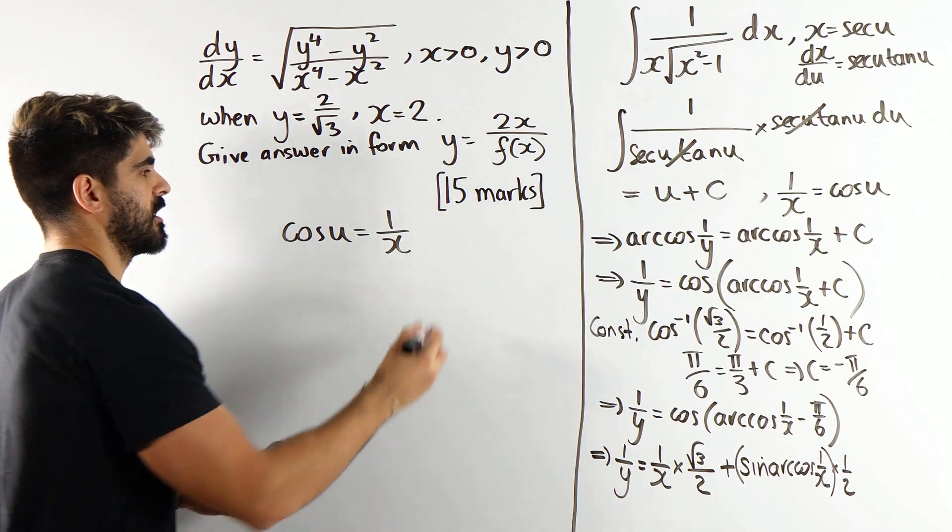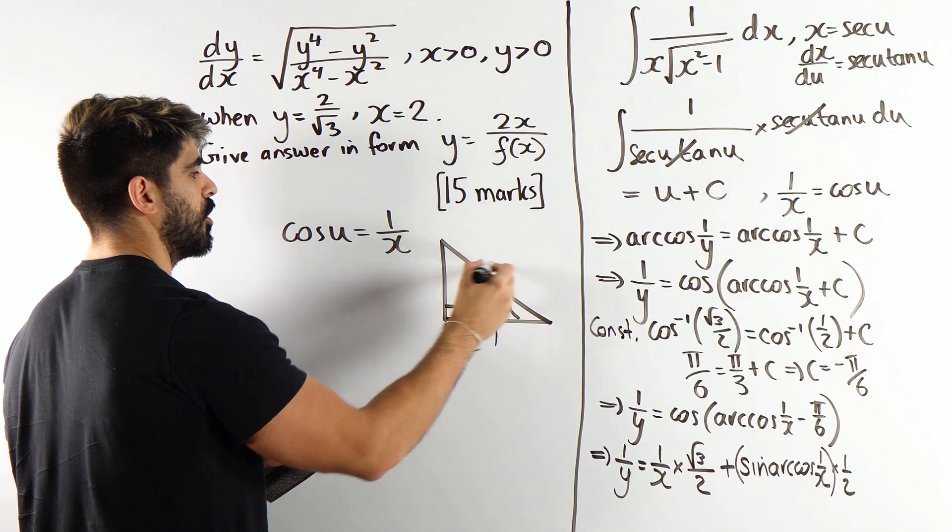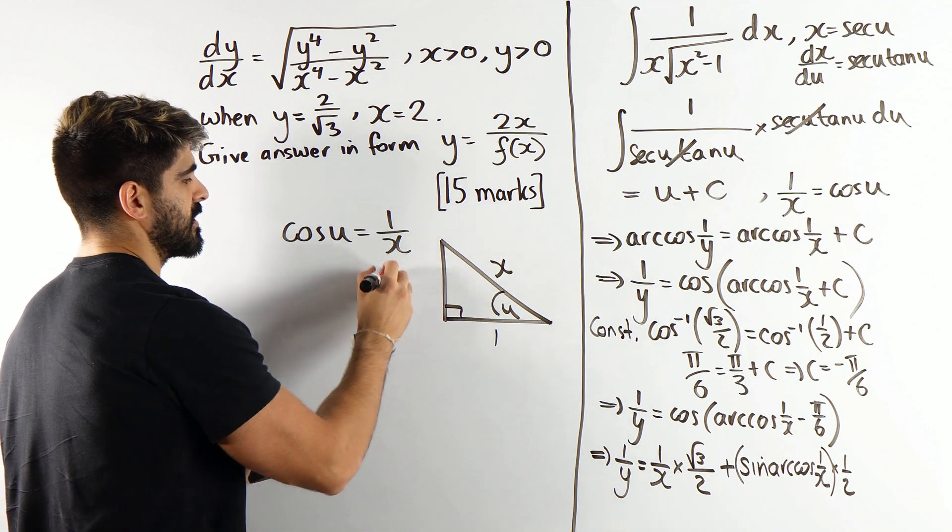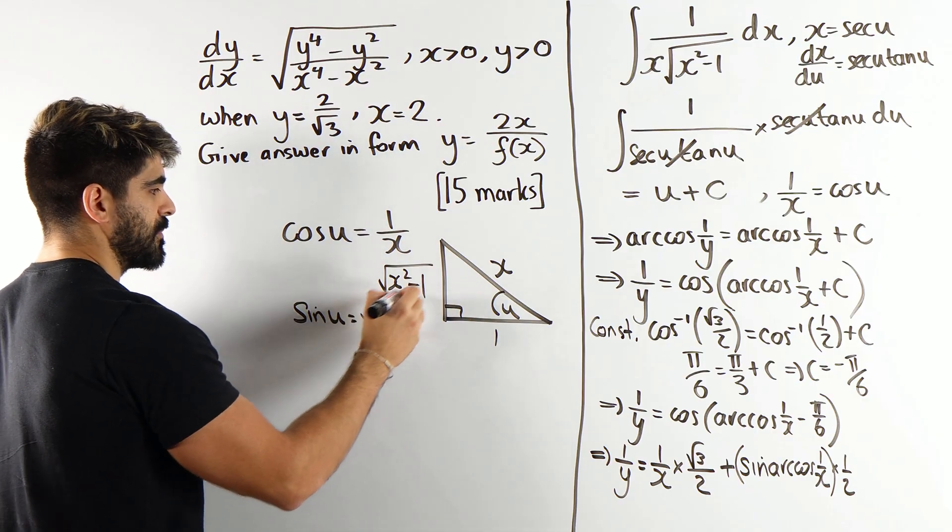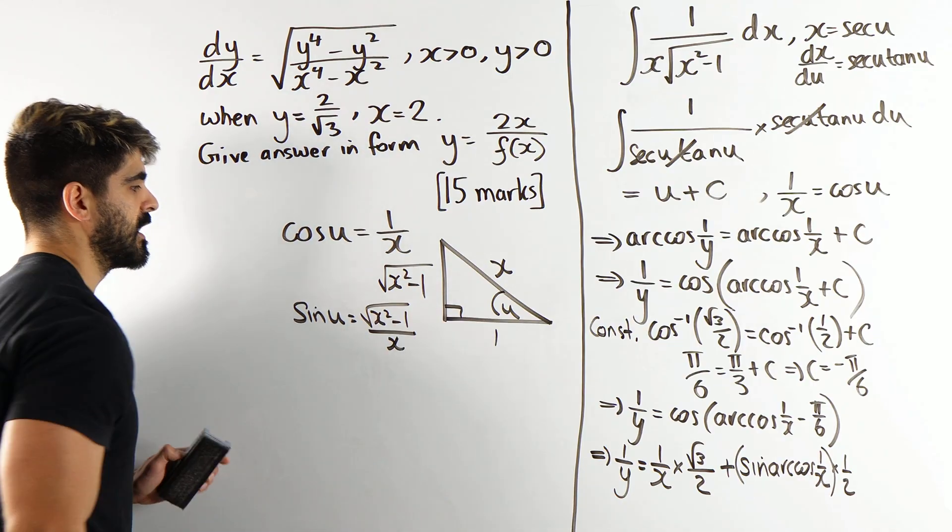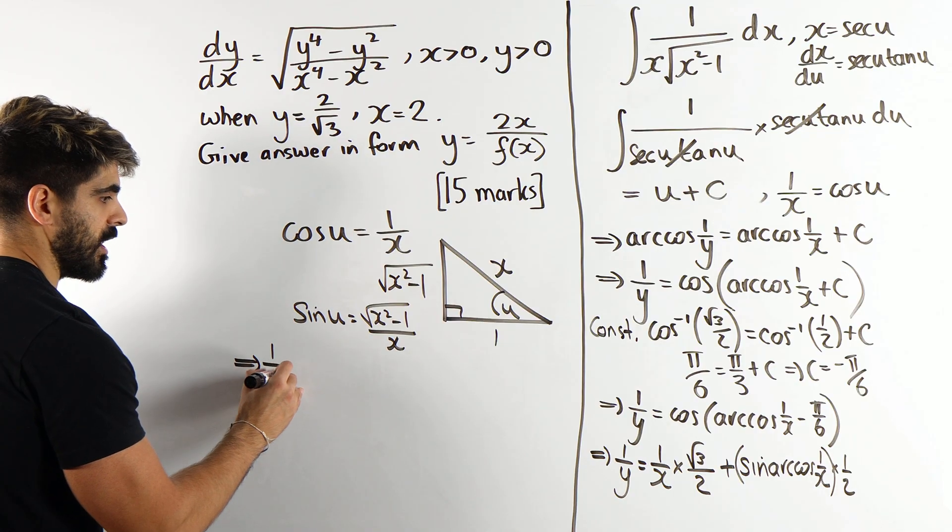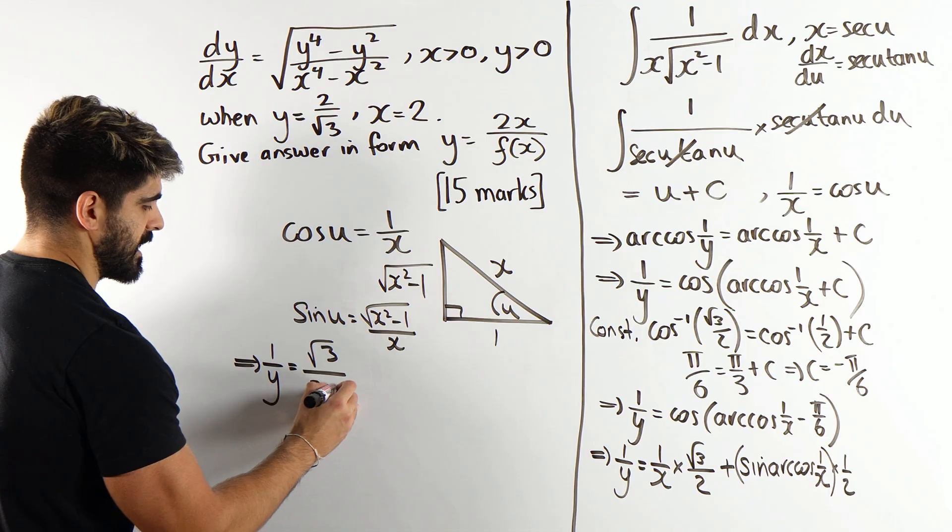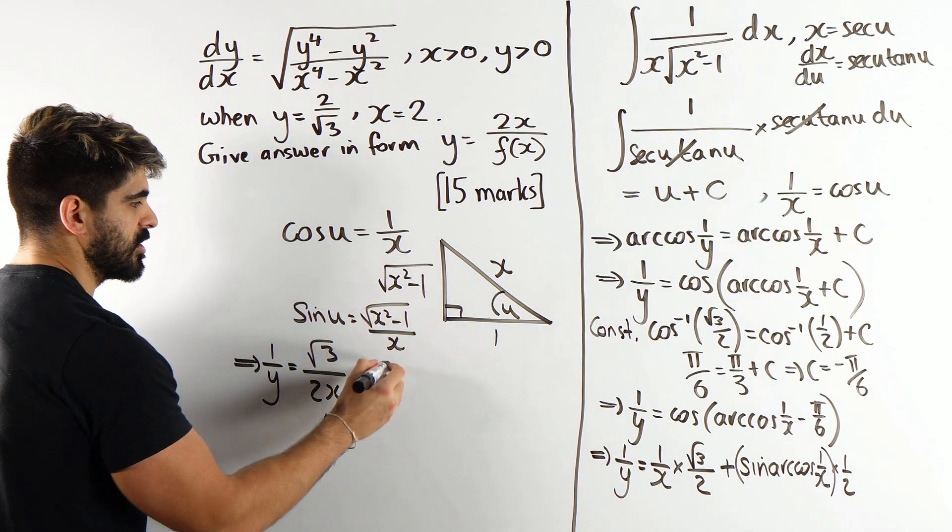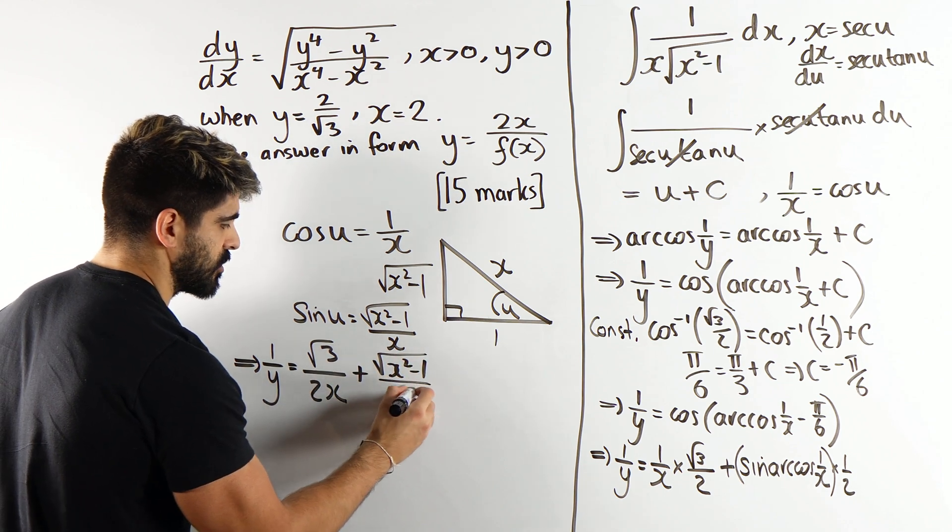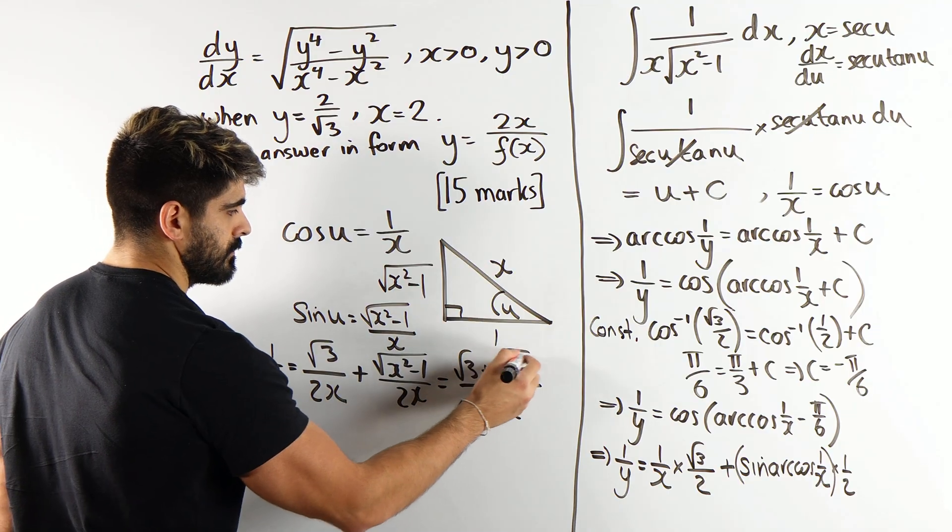So, what's sine of u? Sine of u is that over x. The opposite divided by the hypotenuse. I remember, sine of u was this. I just showed it to you guys. So, we are left with 1 over y is root 3 over 2x plus a half or half lots of this. So, we plus, when you times that by a half, you get root x squared minus 1 over 2x. And that's great because we can write that all into one fraction.